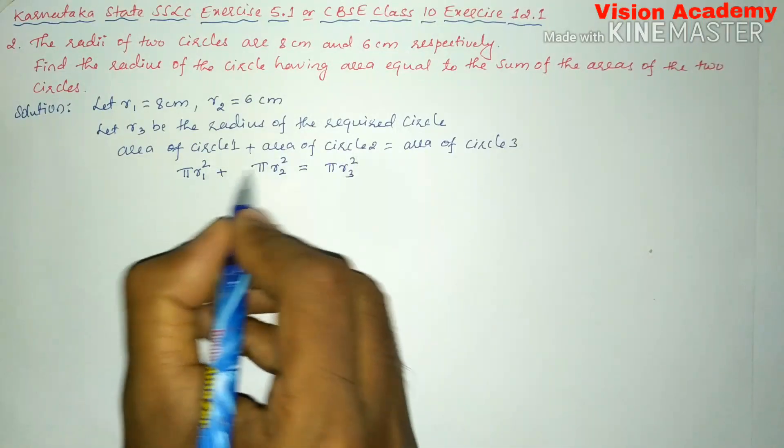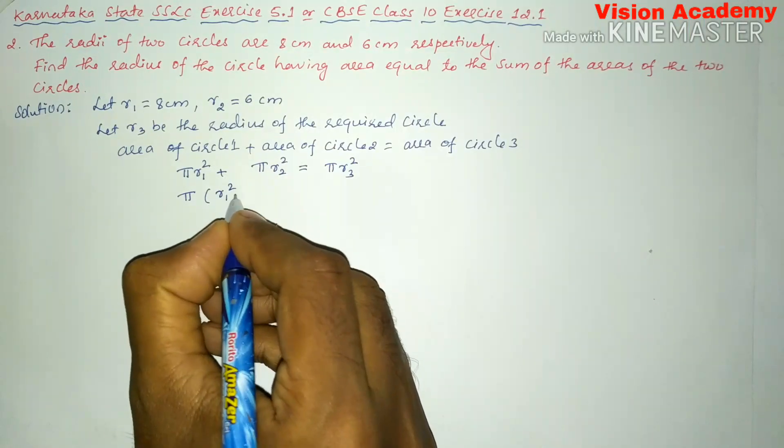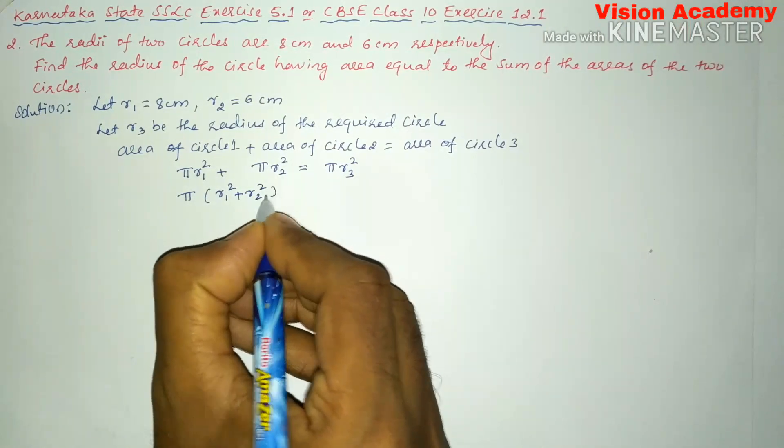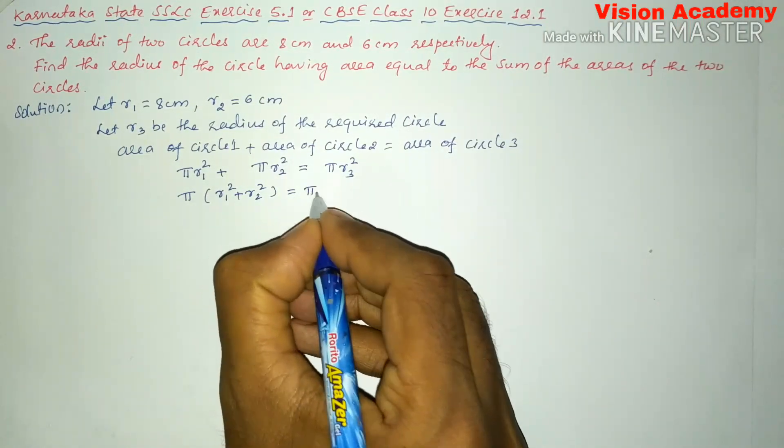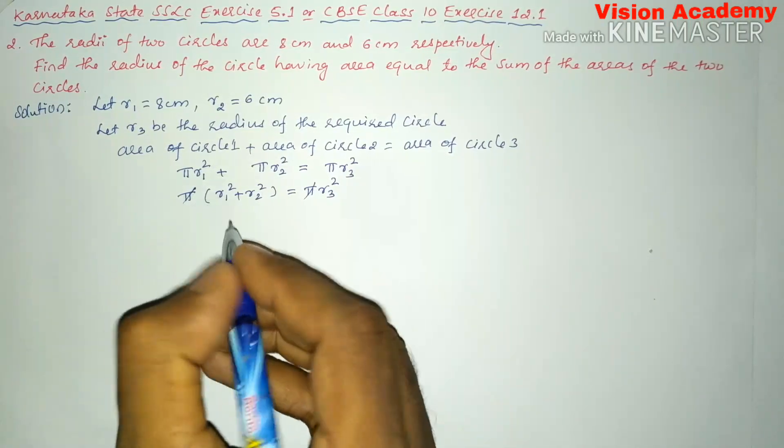Now in both of these two terms pi is common, take it outside. Inside the bracket we remain with r1 square plus r2 square equals r3 square. Here this pi and pi will get cancelled.